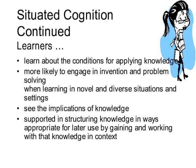A little bit more on situated cognition: learners learn about the conditions for applying knowledge. The more contexts you give them the knowledge in, the better able they are to make use of it. They're more likely to engage in invention and problem solving when learning in novel and diverse situations and settings. If you give them multiple contexts in which to learn things, they're better able to use invention and problem solving. Knowledge is structured in ways appropriate for later use by gaining and working with it in context — this is how you solve the inert knowledge problem.